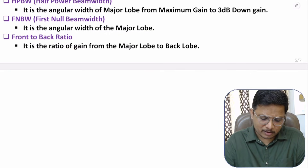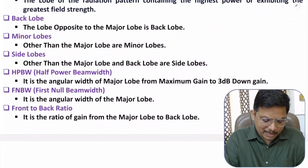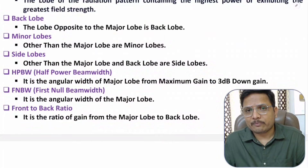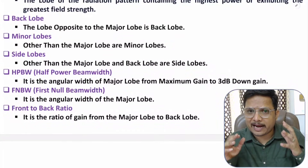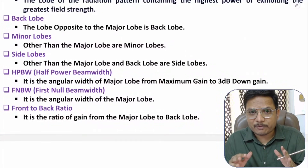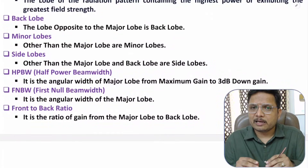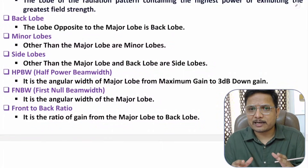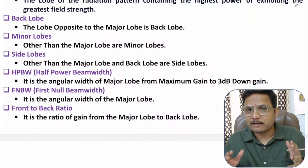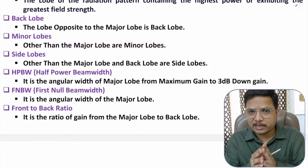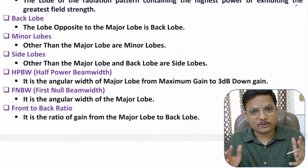So those are the different parameters of a radiation pattern. I hope you have understood all these basic parameters. Based on these parameters you can easily understand the patterns of different antennas, and in future it will be easier to understand how exactly radiation happens with different antennas. If you have anything to share, please note it in the comment section. Thank you so much for watching this video.